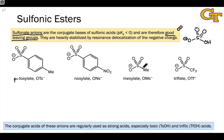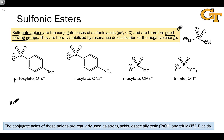Mesolate is the methyl sulfonate anion, and triflate is the CF₃-substituted sulfonate anion. All of these are the conjugate bases of strong acids.